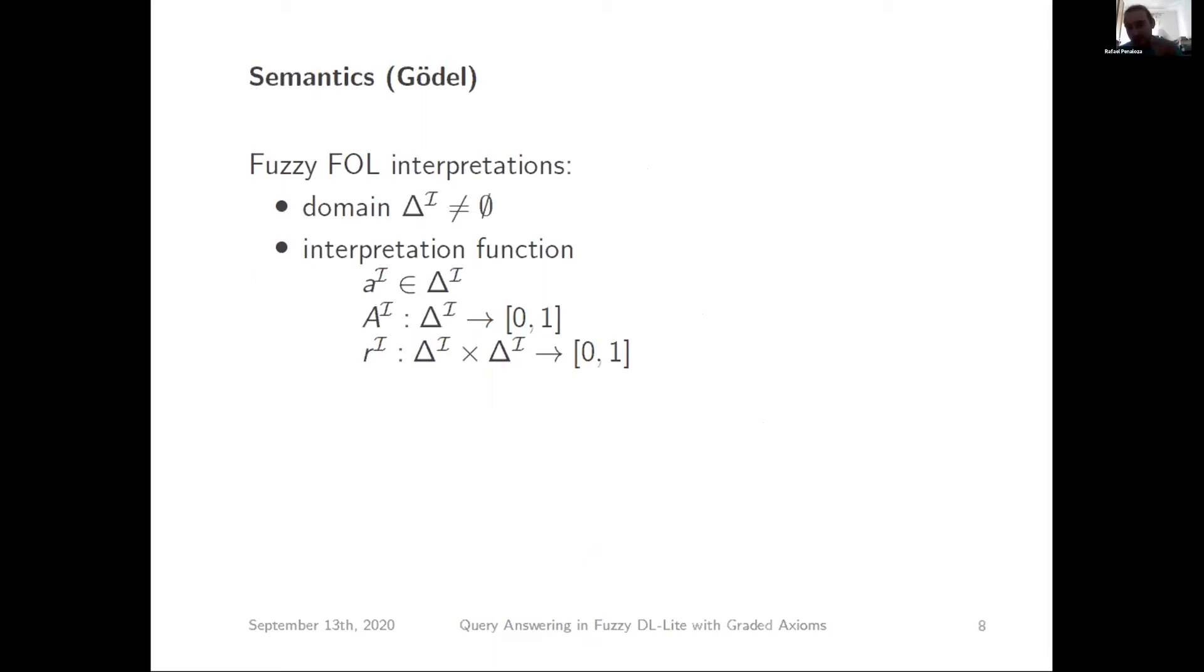So what is the semantics of this? We have to interpret these numbers, these values between 0 and 1. What we use is the standard fuzzy first order logic interpretation. We have a domain that gives us all the objects. An interpretation function maps every individual name into an element of the domain. The difference is how we interpret concept names and role names. Concept names are now a function that maps every element to a value between 0 and 1. 0 is that it doesn't belong to it, 1 that it fully belongs to it, and the intermediate values are how much it belongs. And the same for binary relations. This is extended to the existential quantification and to the negation. Notice that in these semantics, we have this negation that is annihilating. If we negate a concept, we get values 0 or 1. So we get back to a classical thing. This is important for the Gödel semantics.